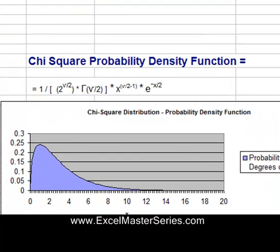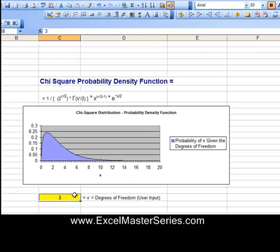Let's take a look at the probability density function for the chi-square distribution. There's the formula right there — it's another ugly formula. And here's an interactive graph of the chi-square distribution.